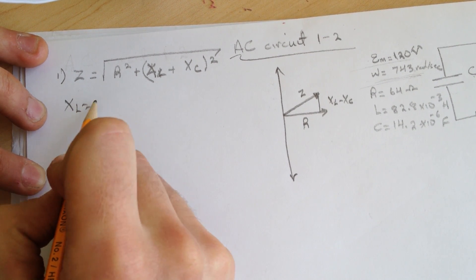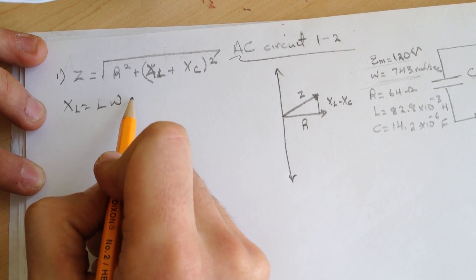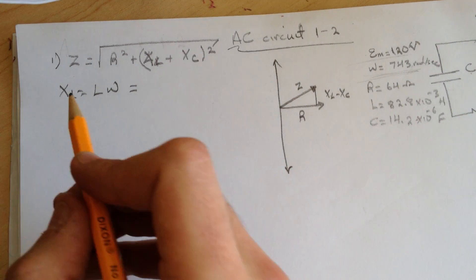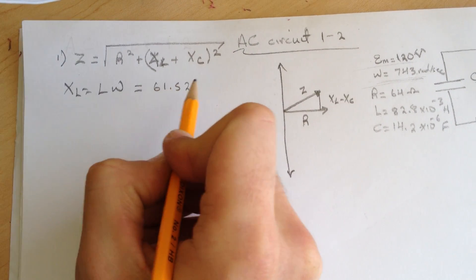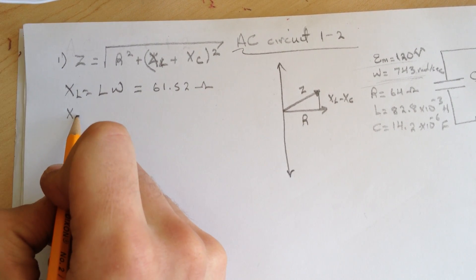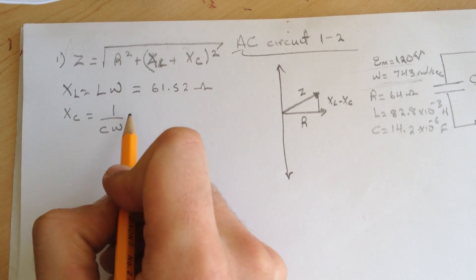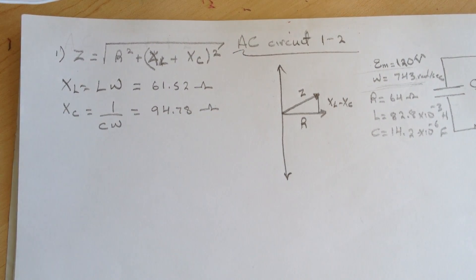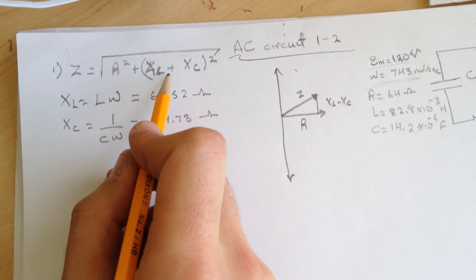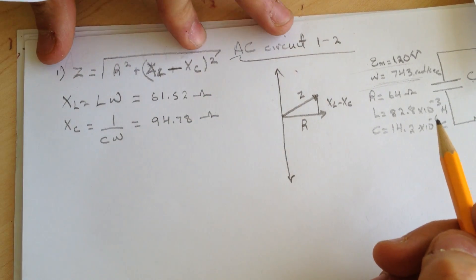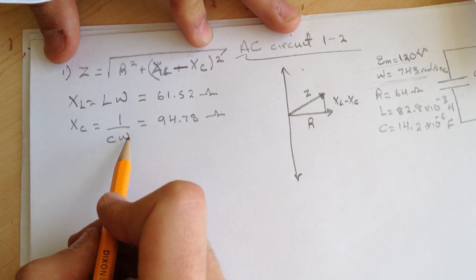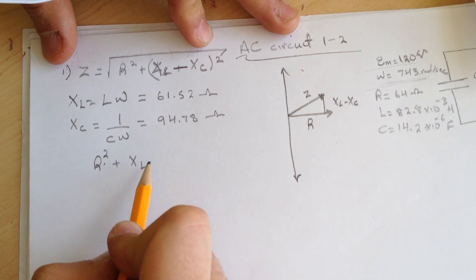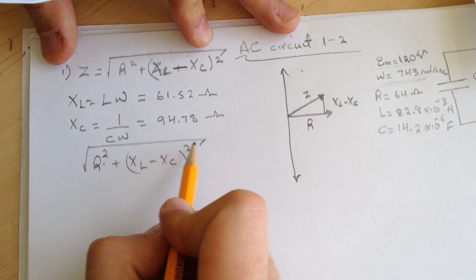How do we get the XL? XL is equal to L times omega and for this I got 61.52 ohms. And for the XC is equal to 1 over C omega. For this guy I got 94.78 ohms. And we have the R from the problem and we just have to calculate the XL minus XC.